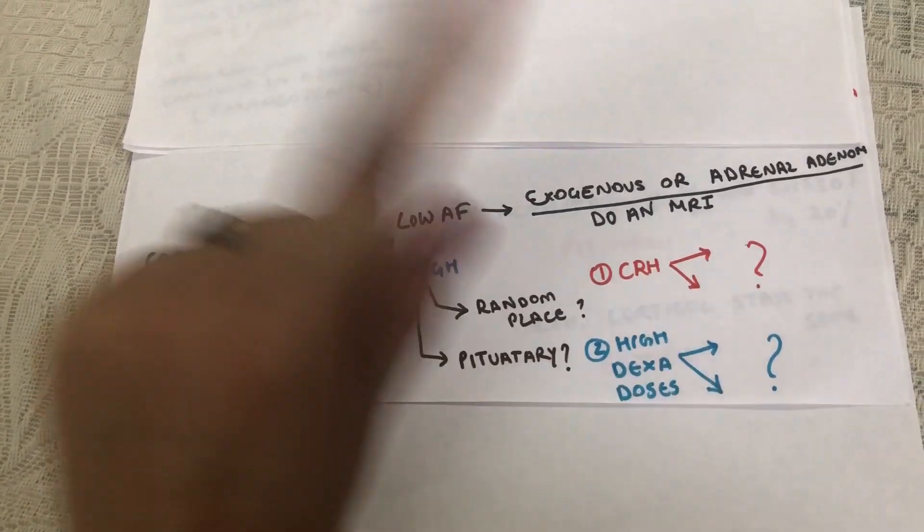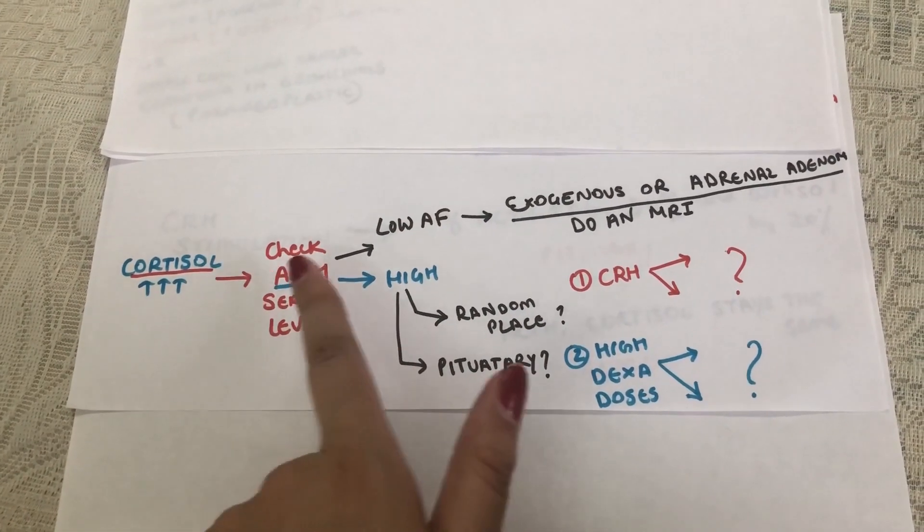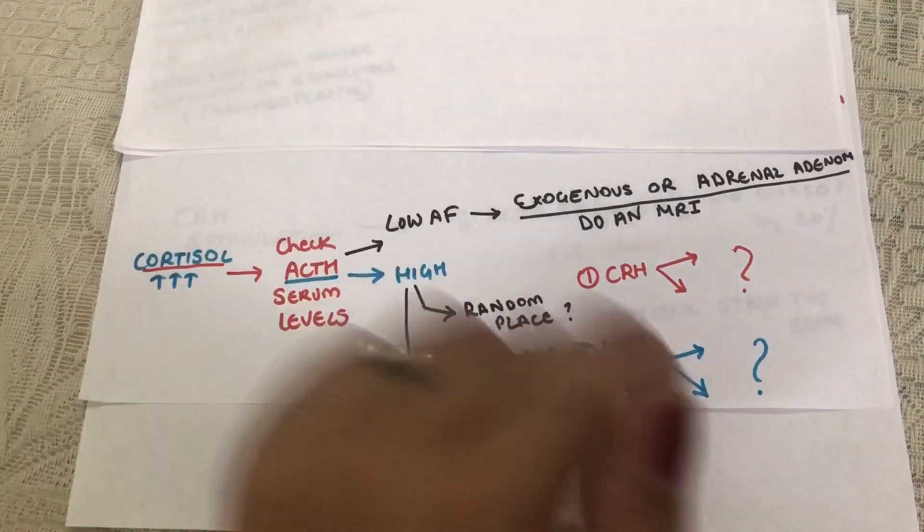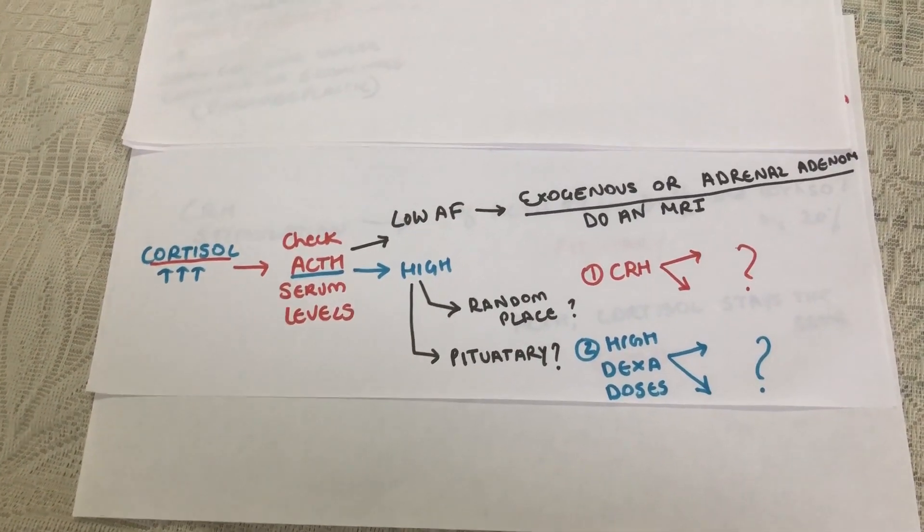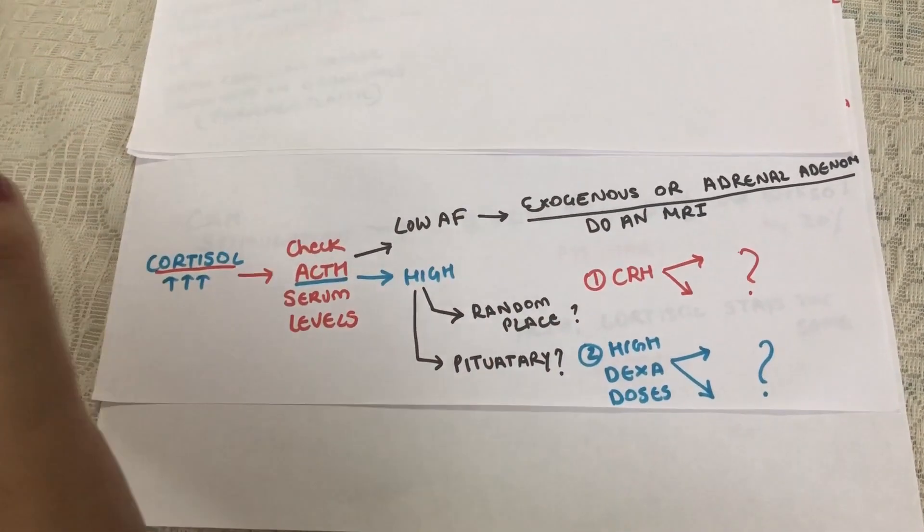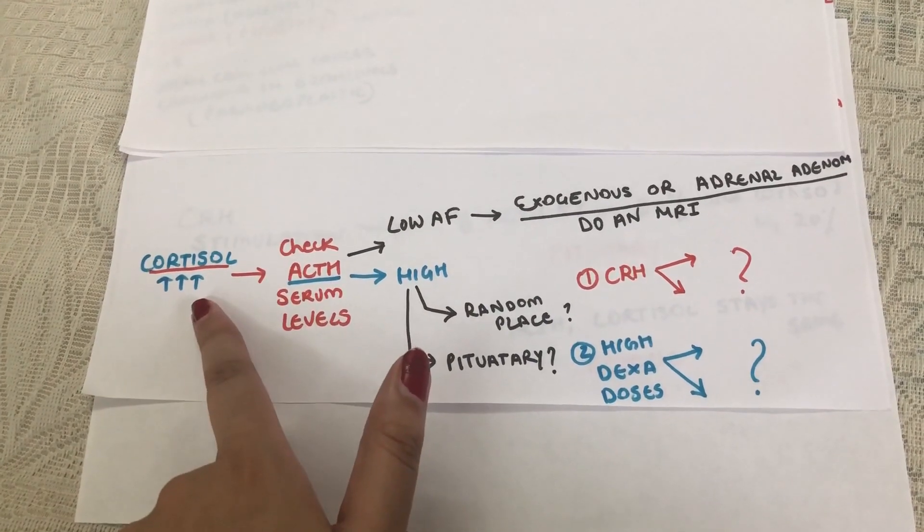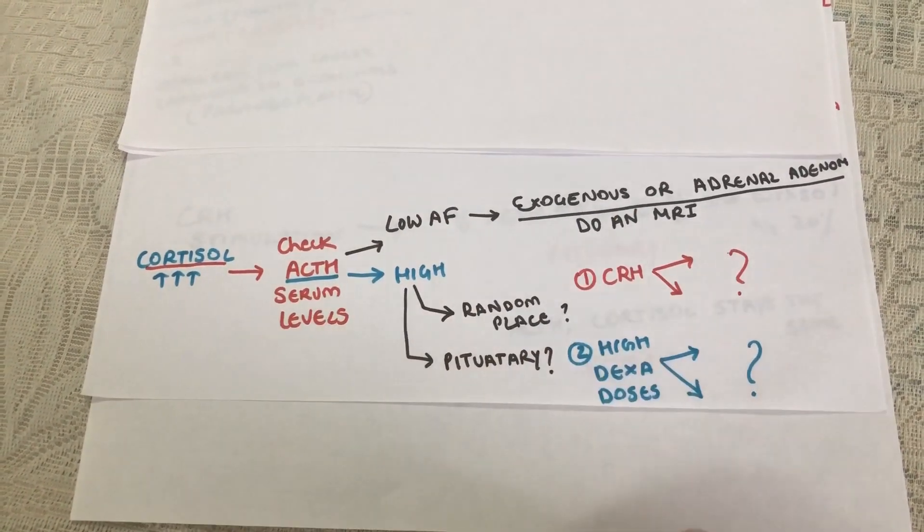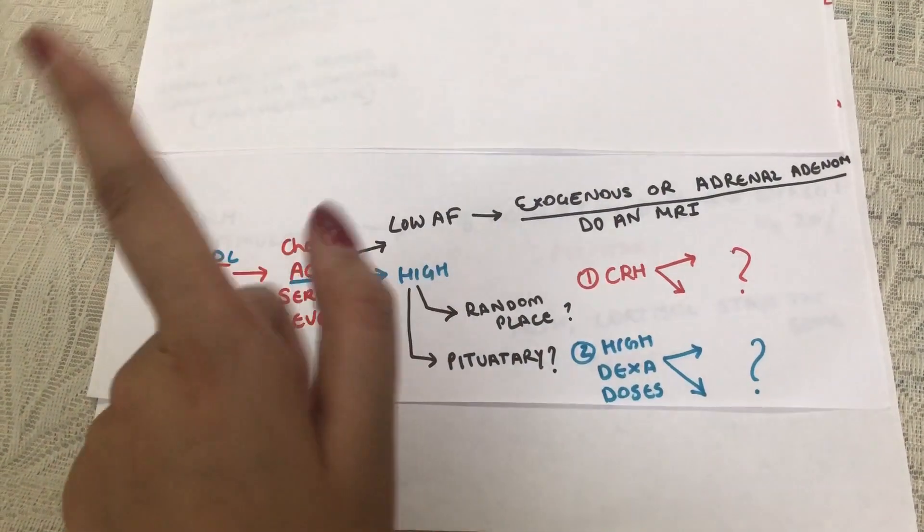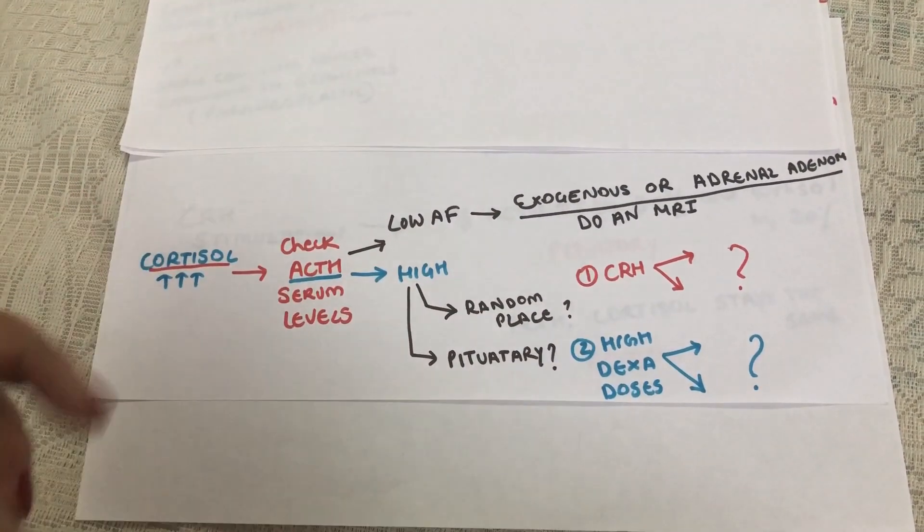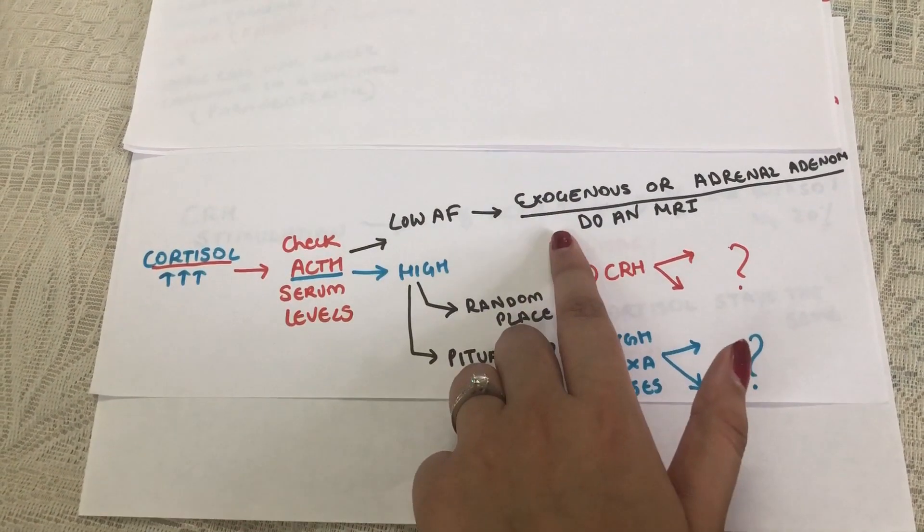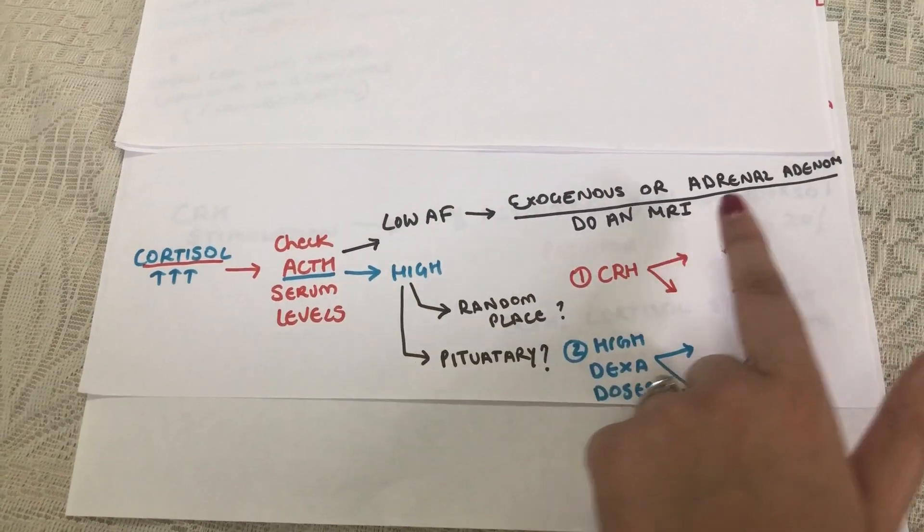We move on to check the serum ACTH levels because this can tell us where the excess cortisol is coming from. If the ACTH levels come back low, that means this patient has elevated cortisol and a low ACTH, or despite a low ACTH. That means the cortisol is coming from either an exogenous source or the adrenals. This indicates exogenous glucocorticoid use or an adrenal mass.